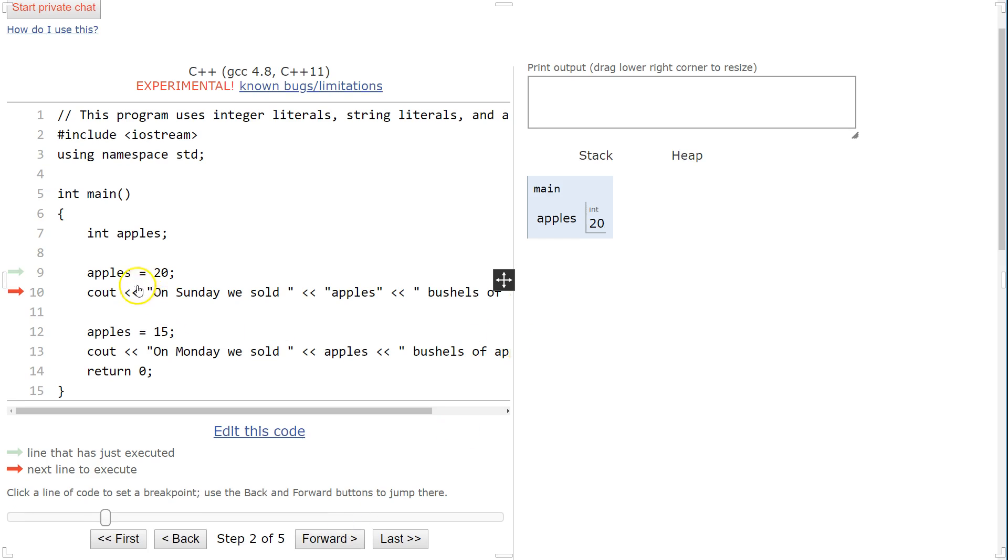Let's hit forward. So integer, still storing 20. The computer looks at it and goes, there's 20 here. Then I'm going to hit forward. On Sunday, we sold apples, bushes of apples. Then we're going to redefine it as 15 again and print it out. And we're all done. But this is messed up.